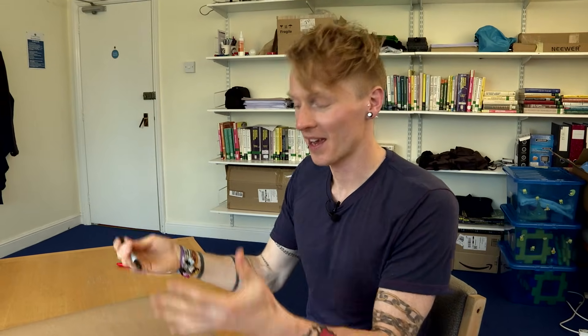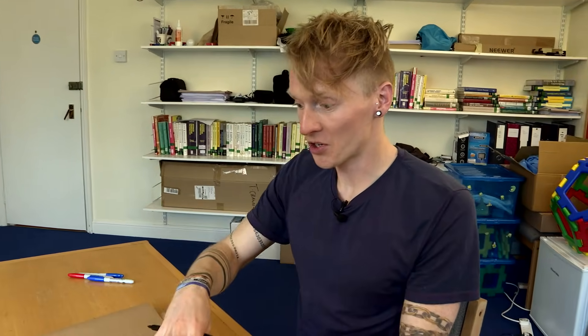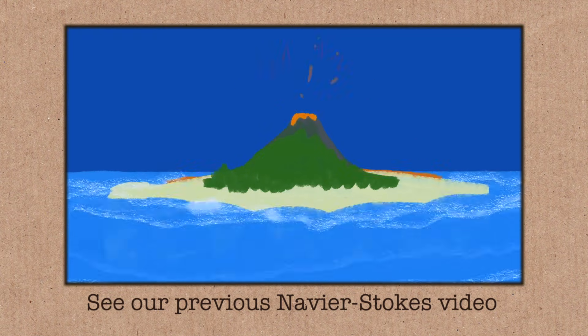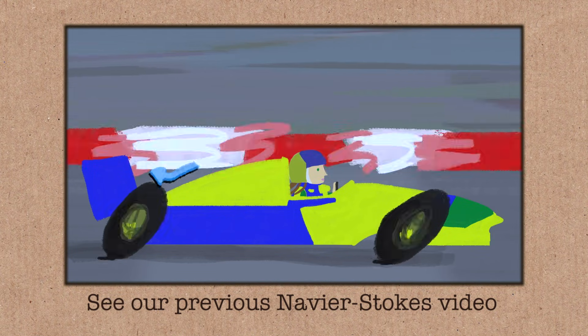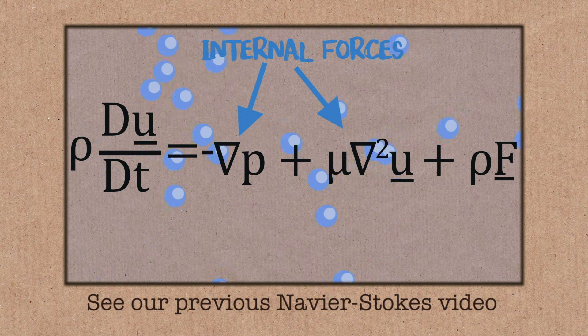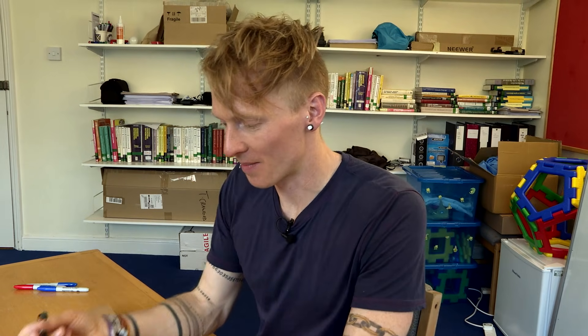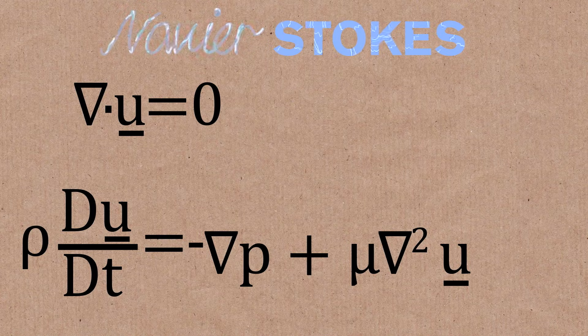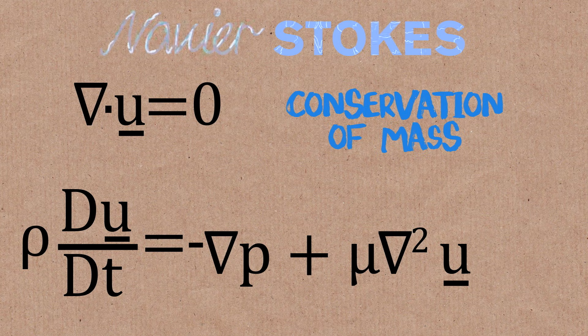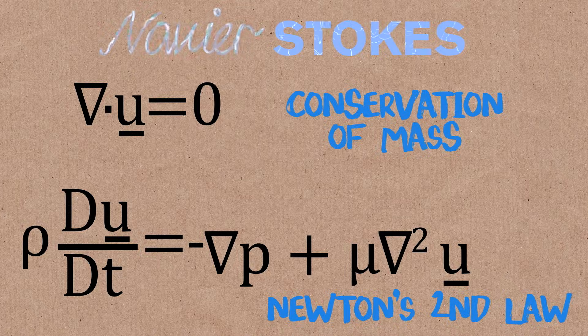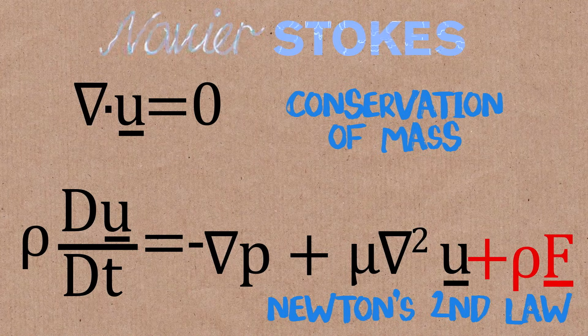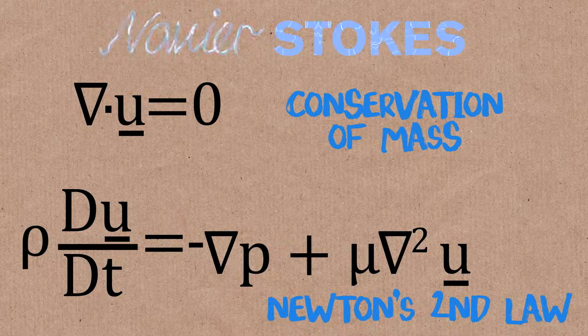Starting point: Navier-Stokes equations. These model the motion and flow of every fluid on Earth - in the universe, in fact. They come from universal laws of physics: mass is conserved and Newton's second law. We have the top equation, the little one, which is conservation of mass, and then Newton's second law. I've made a slight simplification from standard Navier-Stokes by saying there are no body forces - normally there's a big plus F, but we're going to pretend there's not. That's the simple case.